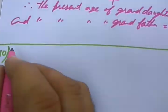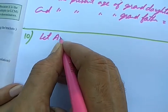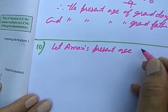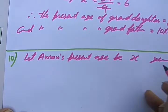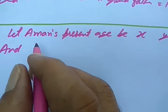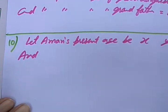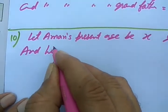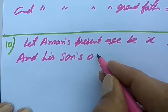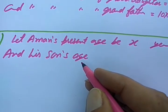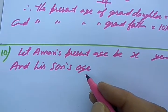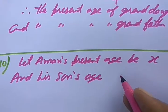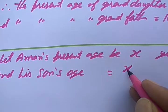Let us take Aman's present age. Let Aman's present age be X years and his son's age. See, he says Aman's age is three times his son's age. So if we take Aman's present age to be X, then his son's age we will have to take one third, that is X upon 3.